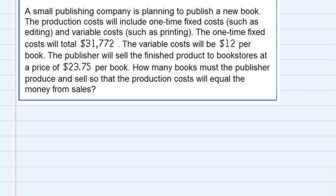The variable cost will be $12 per book. The publisher will sell the finished product to bookstores at a price of $23.75 per book. How many books must the publisher produce and sell so that the production cost will equal the money from sales?